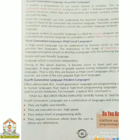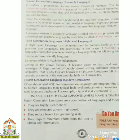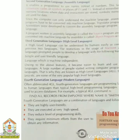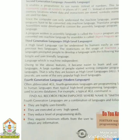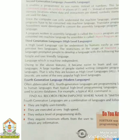Second generation language means assembly language. It enables a program to use a name instead of a number. This language uses mnemonic codes and symbols in place of zeros and ones, instead of remembering the exact memory location where data and instructions are stored. Similar memory addresses are used for data.